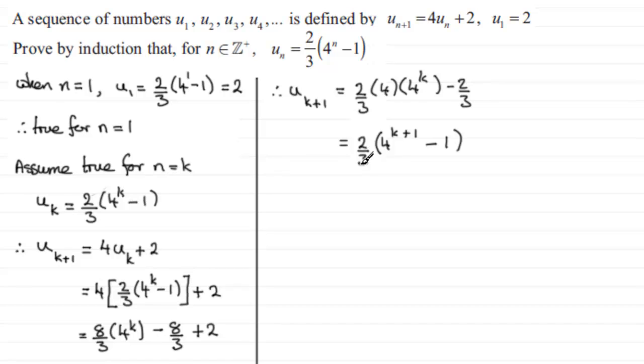And then we've got minus 1. Because 2/3 times minus 1 gives us that minus 2/3. And can you see that what I've got now is that u_{k+1}, wherever n is written, I've got k plus 1. You've got 2/3, 4 to the power k plus 1. So, therefore, it is true for n equals k plus 1.